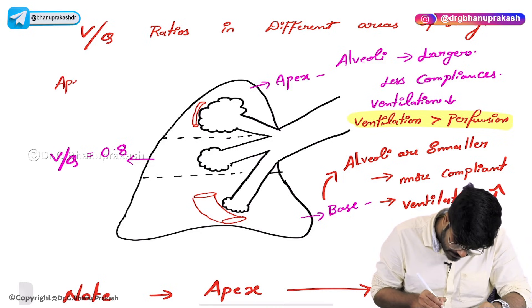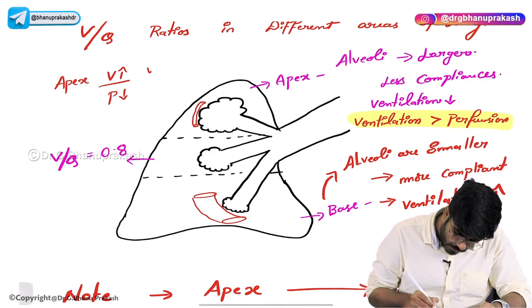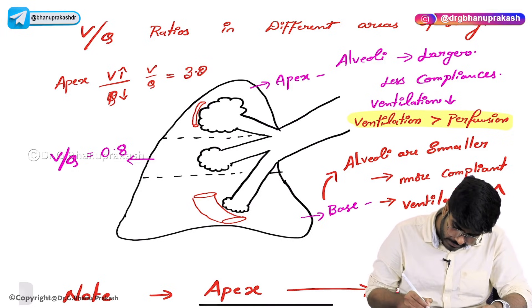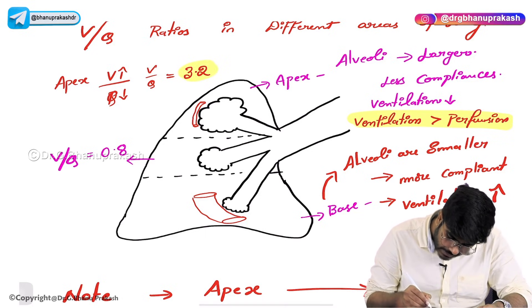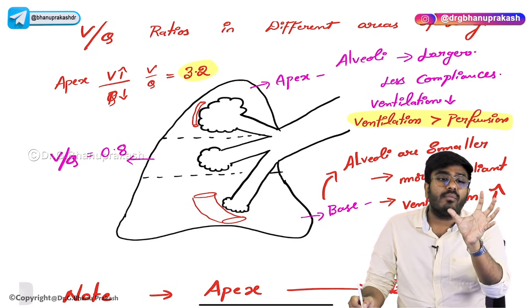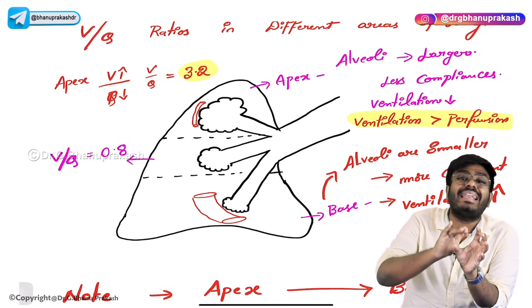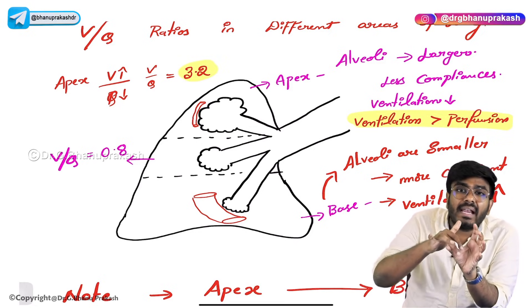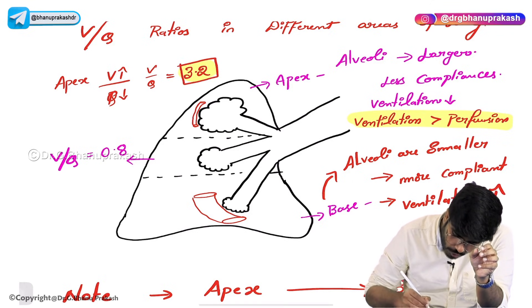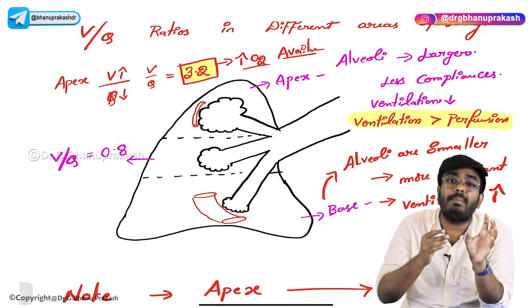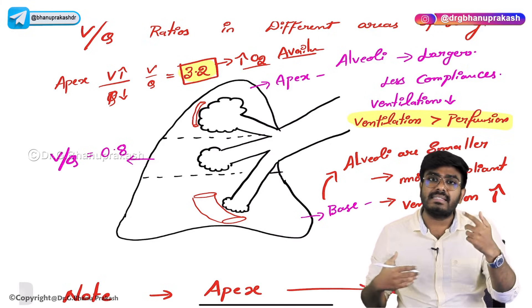So in the apex, ventilation is more compared to perfusion, and perfusion is lesser. The V by Q ratio in the apex is 3.2. This 3.2 tells us there is ventilation but perfusion is not enough — there is less perfusion when compared to ventilation, so extra air is available in the apex. The higher the ventilation-perfusion ratio, the more oxygen is available, because not enough blood is coming to the upper regions.